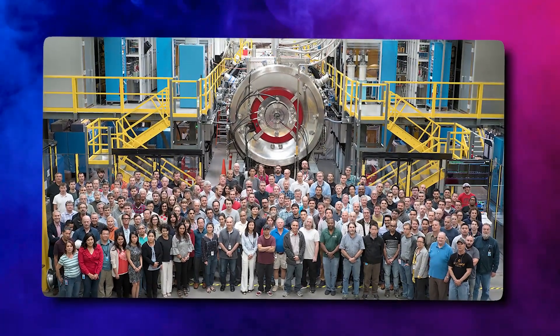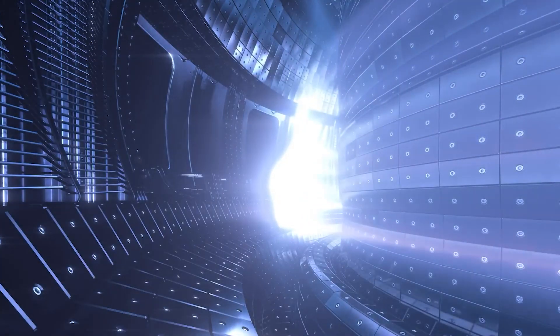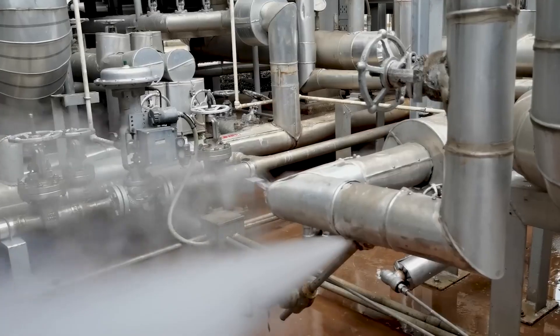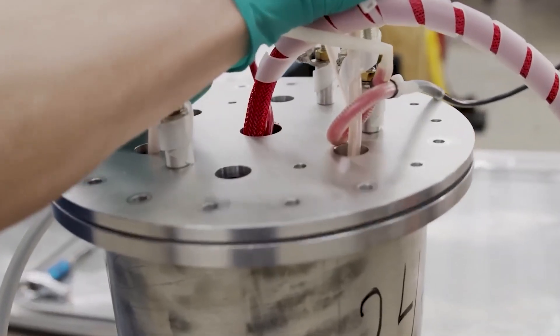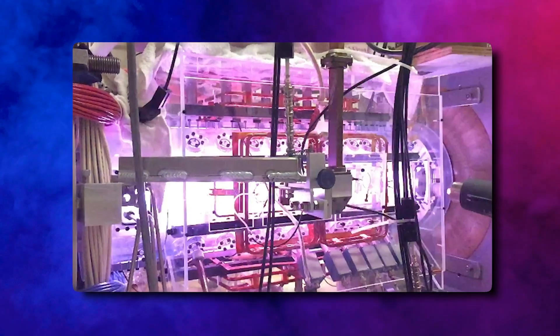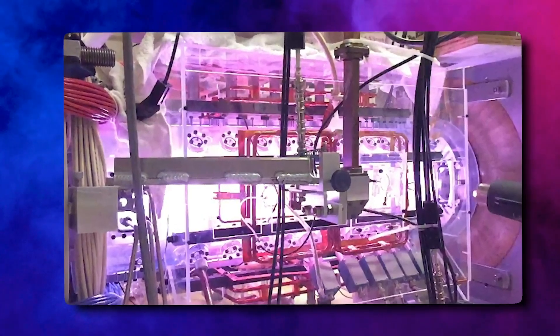Hydrogen-boron fusion is aneutronic, which means that the main reaction doesn't make any harmful neutrons. The problem is that to burn the fuel, temperatures as high as 3 billion degrees Celsius are needed. Even though FRC machines seem less likely than some other magnetic confinement methods to cause plasma instability, no one has yet shown that an FRC reactor can make a stable plasma.